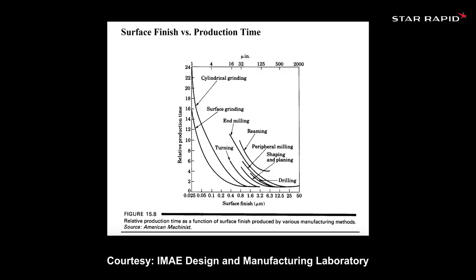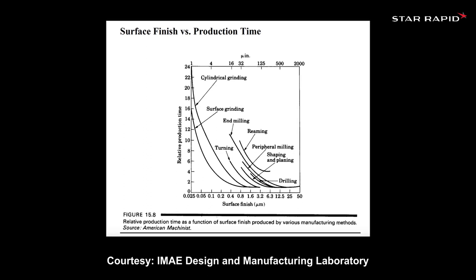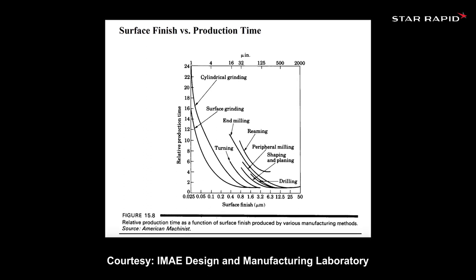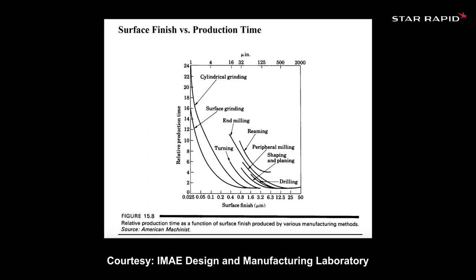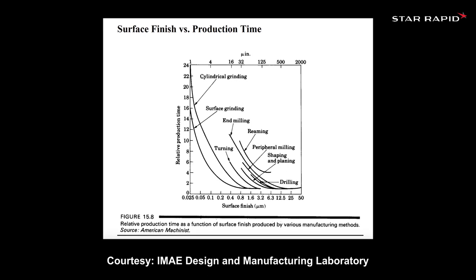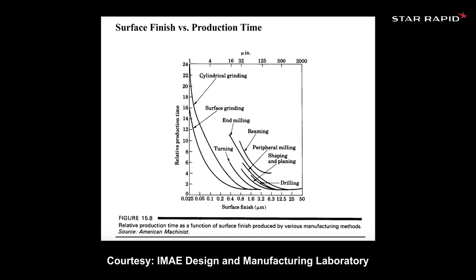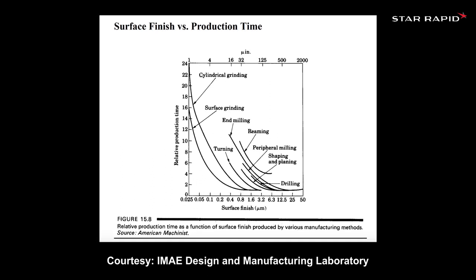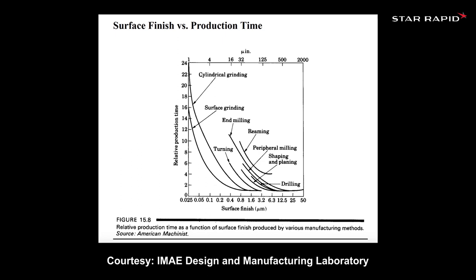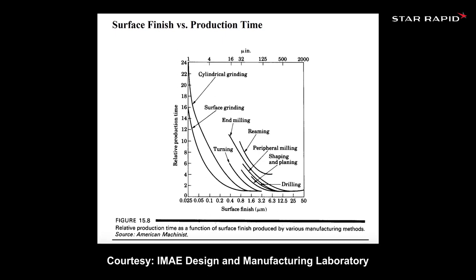The costs associated with making finer finishes go up exponentially as Ra numbers get smaller, and this is regardless of the manufacturing process used. This also applies to production lead times. So, only specify low Ra values if it's absolutely necessary for your product application. Otherwise, you're just wasting time and money.